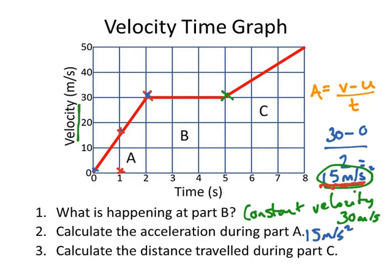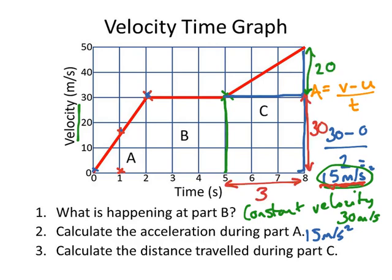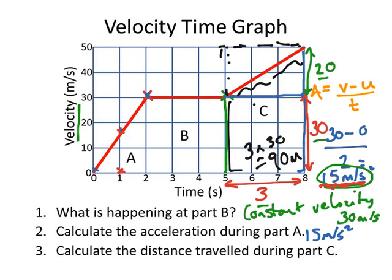To calculate the distance travelled, you need to realise that the distance travelled is the area under the graph. Split it into different shapes — there's a triangle and a rectangle. The shapes measure 3 on the bottom, 30 on the side, and 20 on the triangle bit. The rectangle: 3 times 30 equals 90 metres. The triangle: 20 times 3 divided by 2 equals 30 metres. So the total distance travelled is 120 metres.